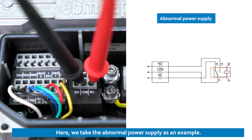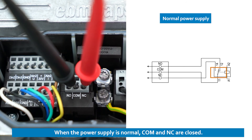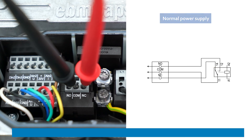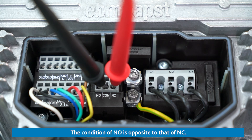Taking the abnormal power supply as an example: when the power supply is abnormal, COM and NC are opened. When the power supply is normal, COM and NC are closed. The condition of NO is opposite to that of NC.